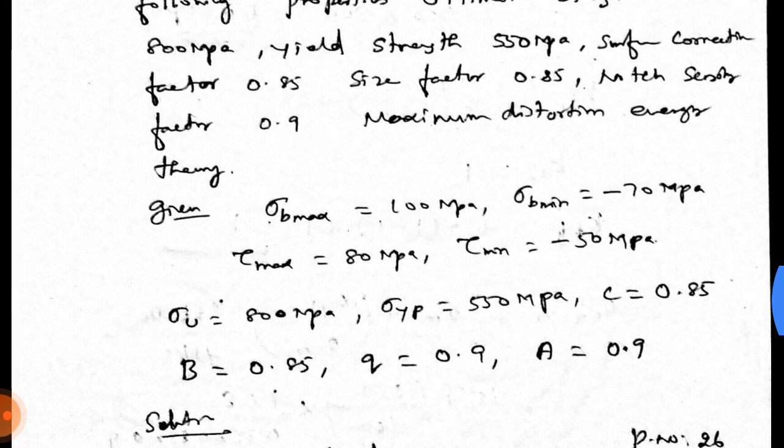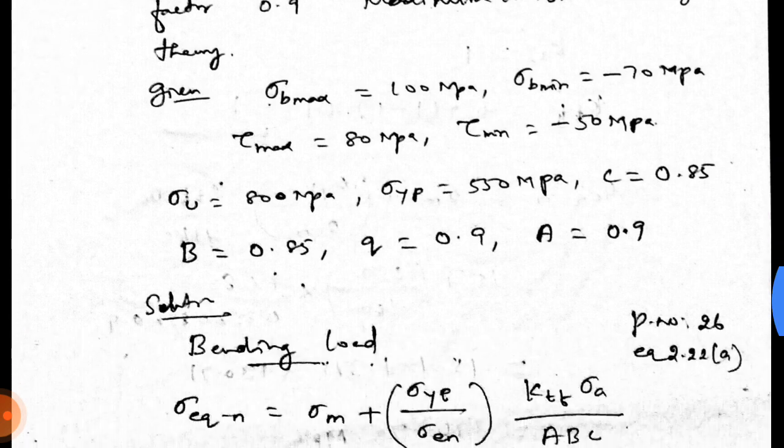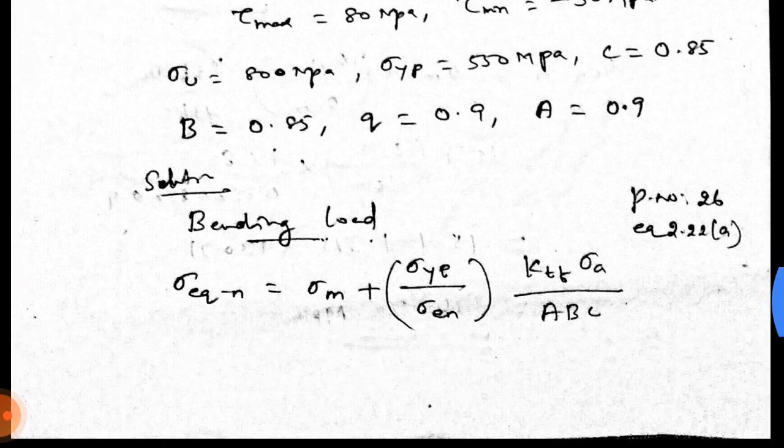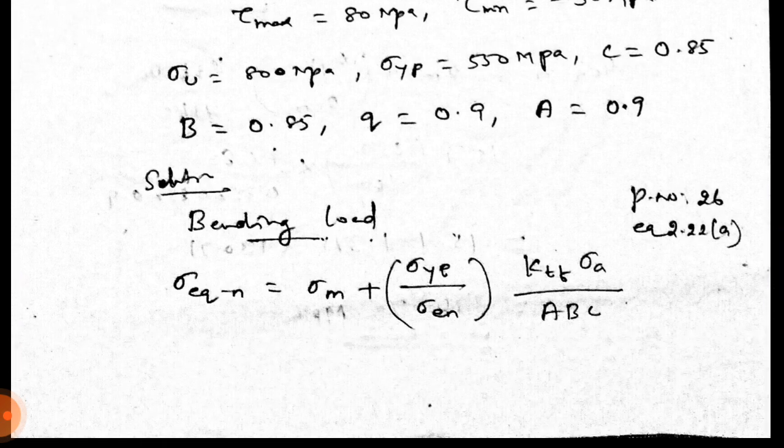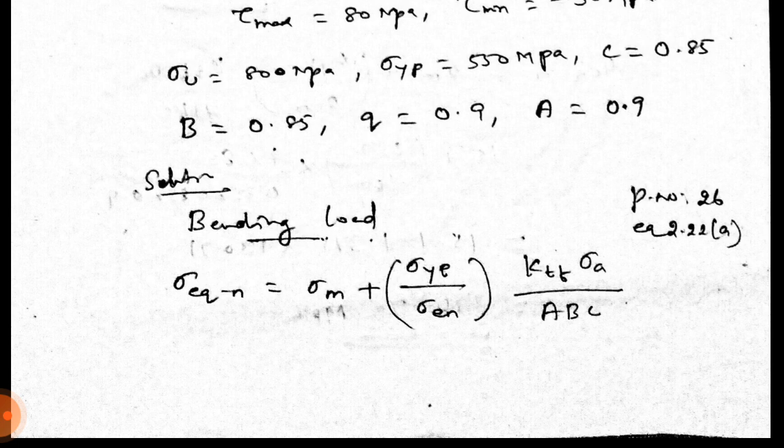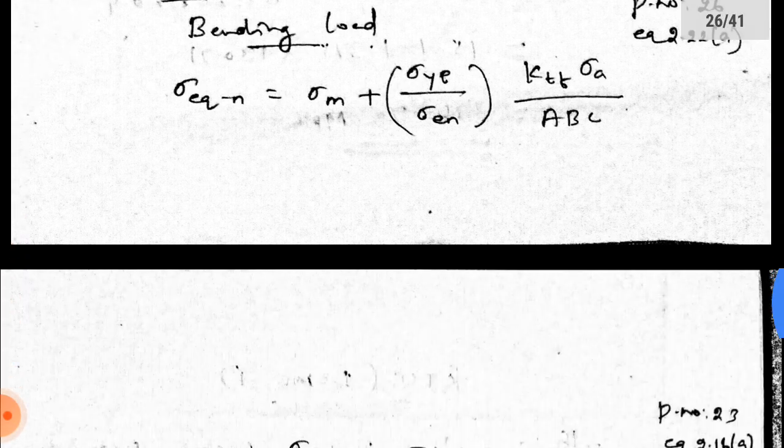Now we are going to get the bending load. In page 26, equation number 2.22a. Sigma equivalent minus n equal to sigma m plus sigma yp divided by sigma en into ktf sigma a divided by abc. First, the unknowns. First, sigma m.